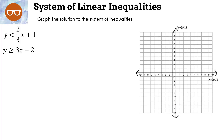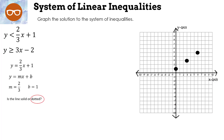Graph the solution to the system: y < (2/3)x + 1 and y ≥ 3x − 2. We'll then test each region. First, graph y = (2/3)x + 1. It's in slope-intercept form: slope = 2/3, y-intercept = 1. Graph y-intercept at 1, then go up 2 over 3, up 2 over 3. It's a dotted line because the original inequality is 'less than.' Label it.